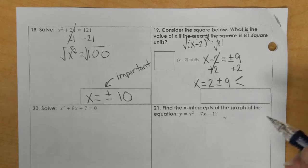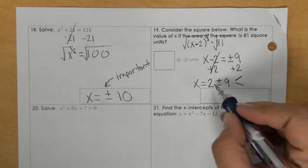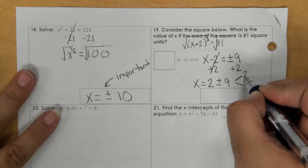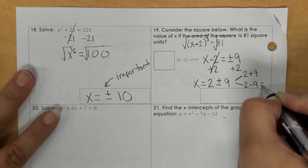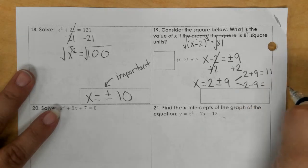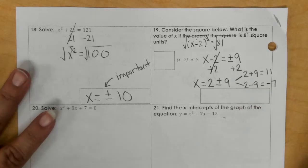And we need to branch that off. So we have 2 plus 9 and 2 minus 9. So we have 11 and negative 7.